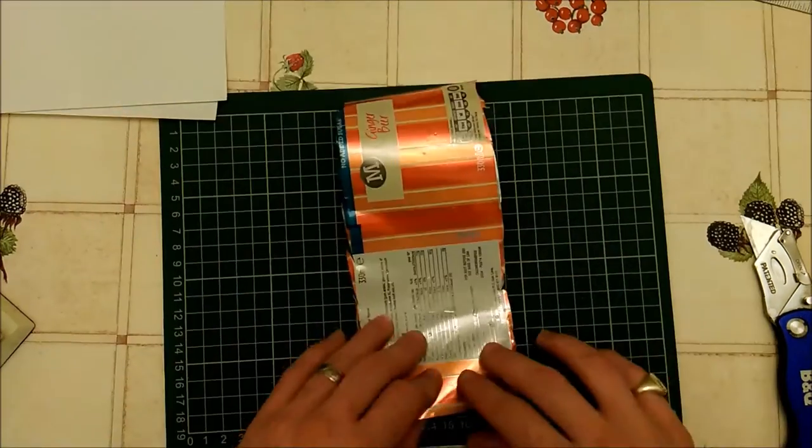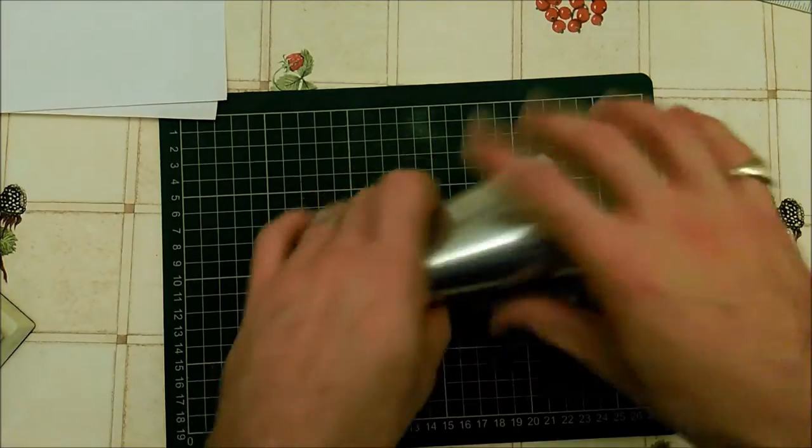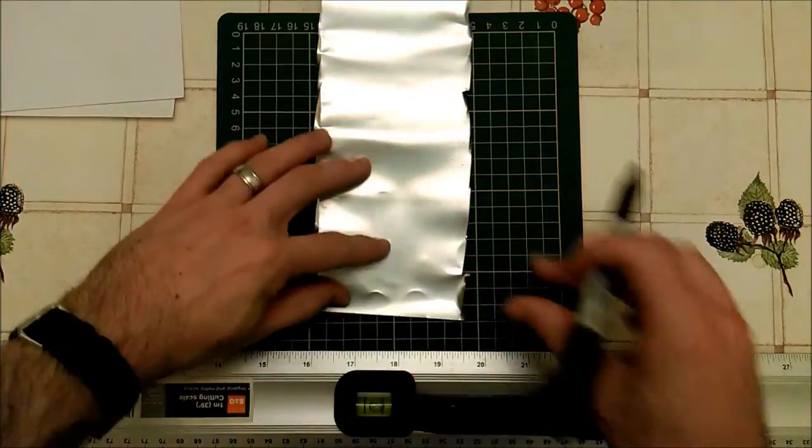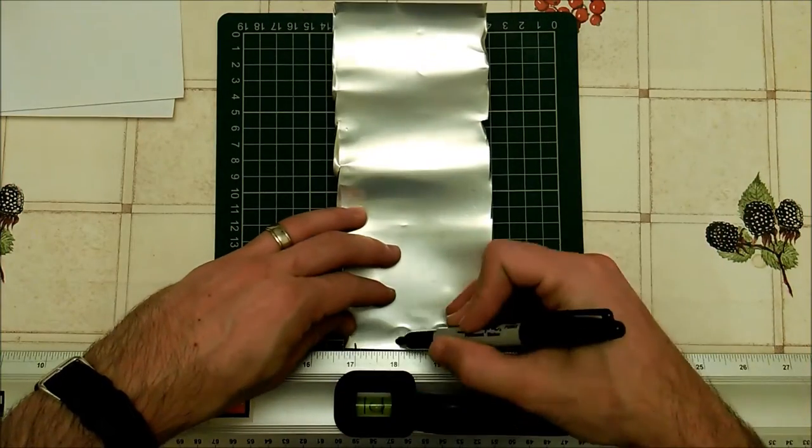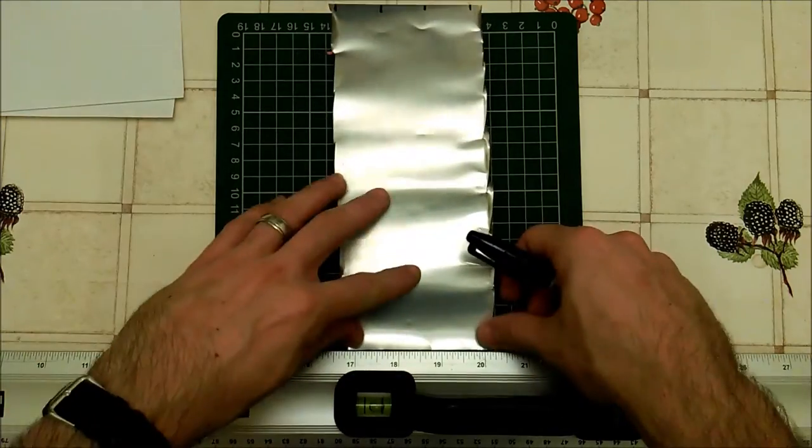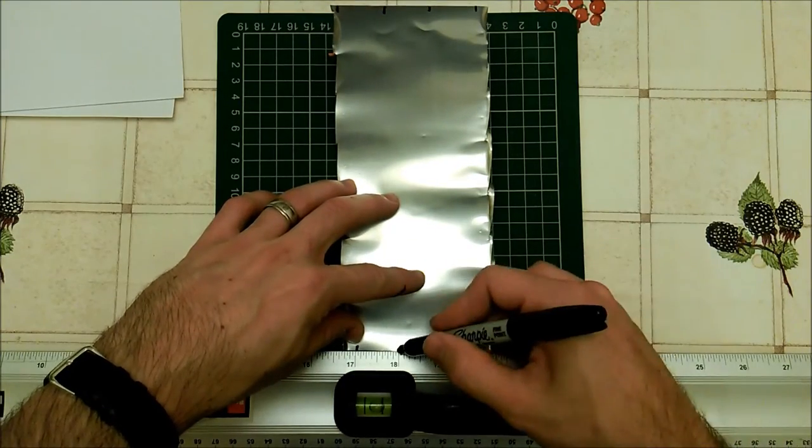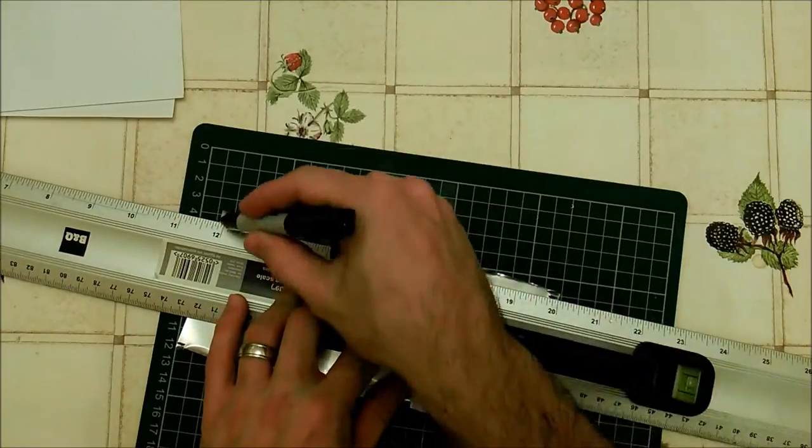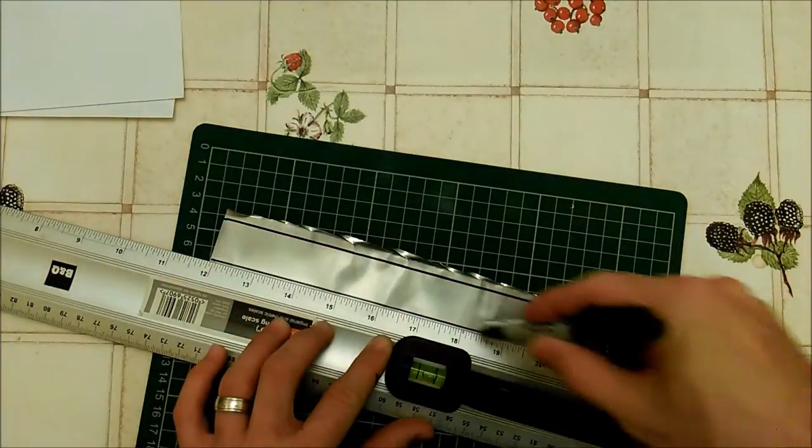Once done that turn it inside out and roll it back on itself to help flatten out that curve. Next up use your permanent marker and your ruler to mark every inch along the edge, repeat on the other end. Then turn your ruler sideways and join up your marks to make three inch long strips.